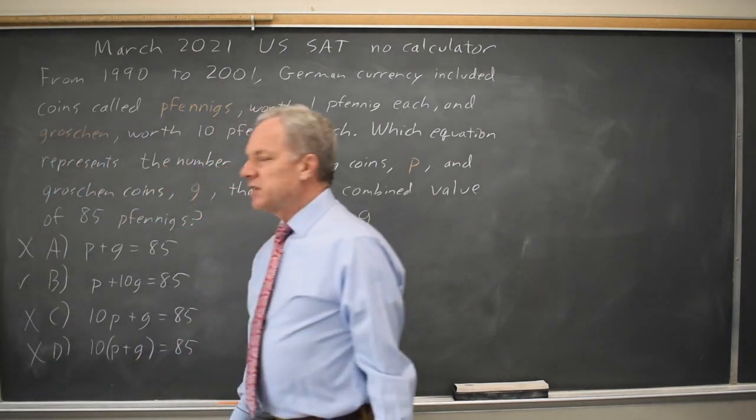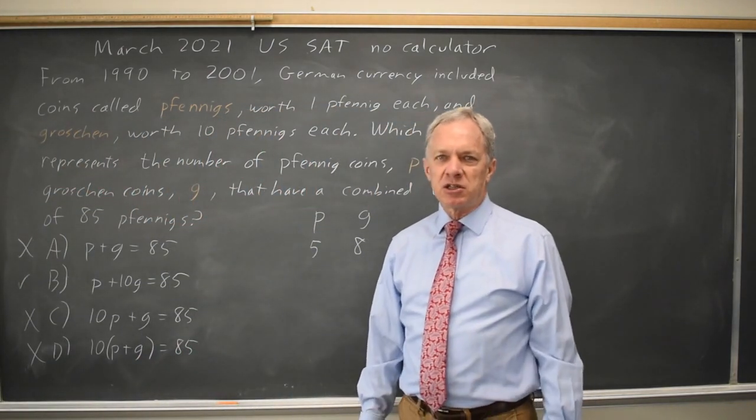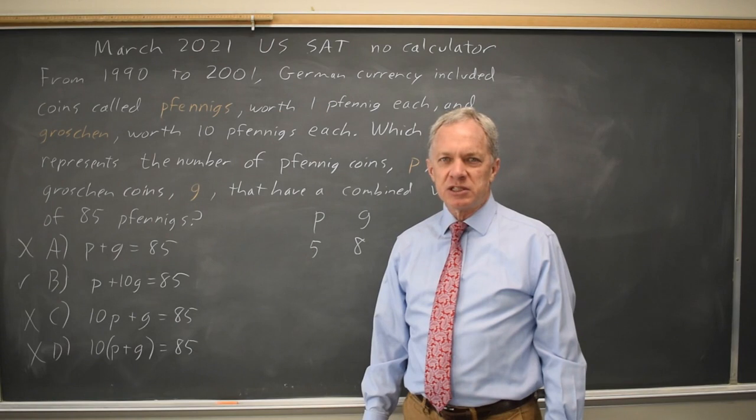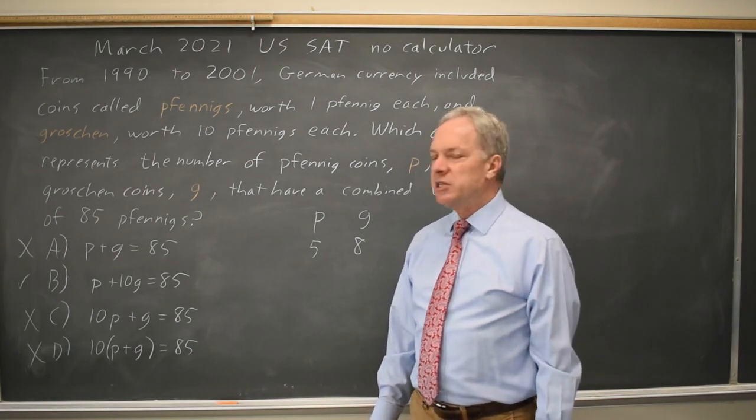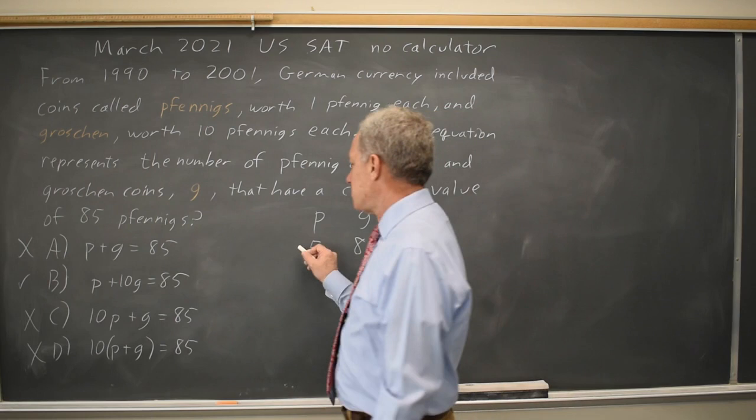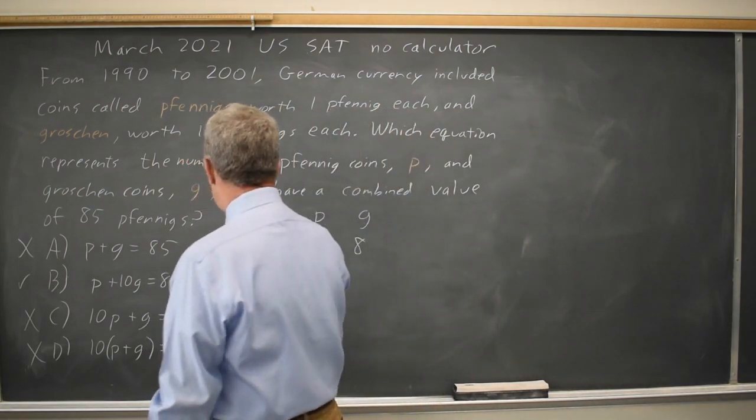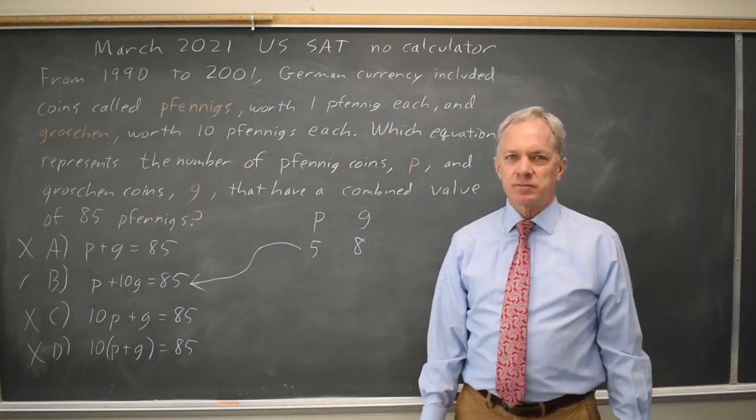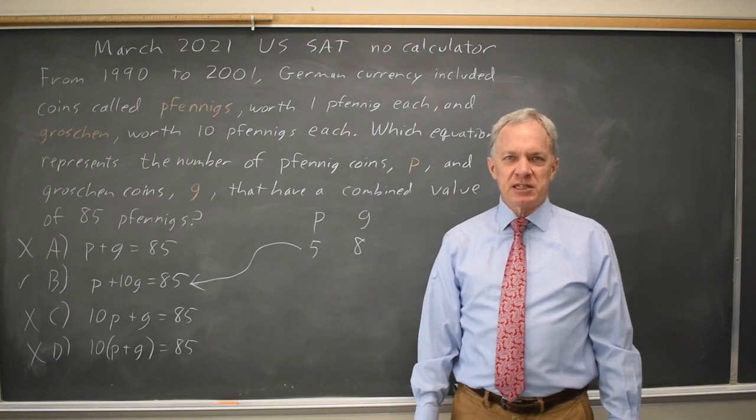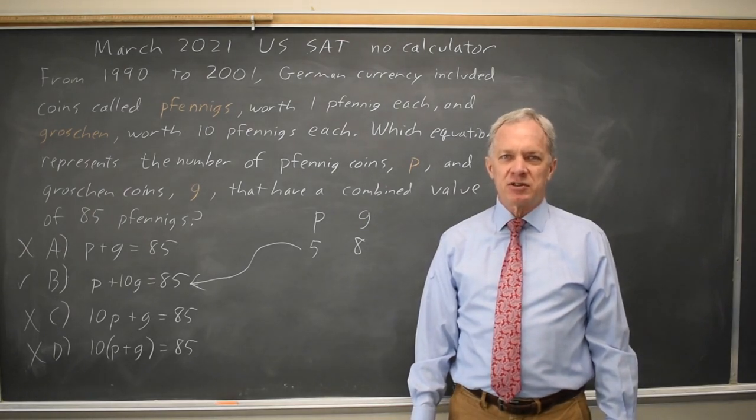The correct equation has to work for all combinations of Grosian and Fennig coins that add up to 85 Fennigs. And choice B is the only one that works for this combination of coins, so choice B is the correct answer. Come back soon for my next SAT video. With math, there's always more.